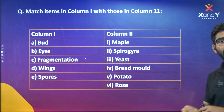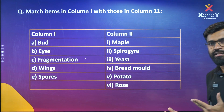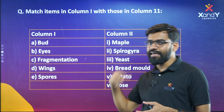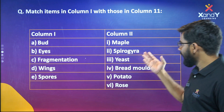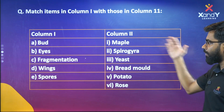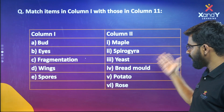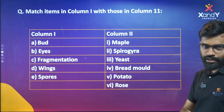We have done the sexual reproduction methods and seed dispersal methods. Column 2 contains: Tulip, Apple, Spirogyra, Yeast, Bread Mold, Potato, and Rose.